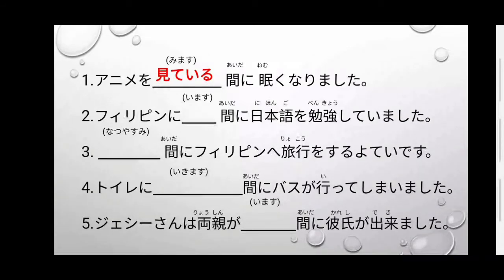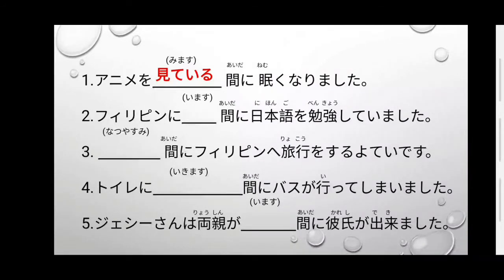Naniban. Philippine ni [blank] aida ni, Nihongo benkyo shite imashita. Philippine is Philippines, Nihongo is Japanese language, benkyosuru means to study. The verb here is imas — we make it verb plain ru, so imas becomes iru. So: Philippine ni iru aida ni, Nihongo benkyo shite imashita. In English: While I was in the Philippines, I was studying Japanese.